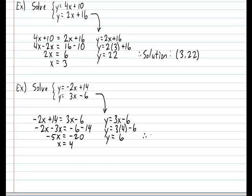Therefore, the solution to this system is 4 and 6. That means the two lines will intersect each other at the coordinate 4 and 6.